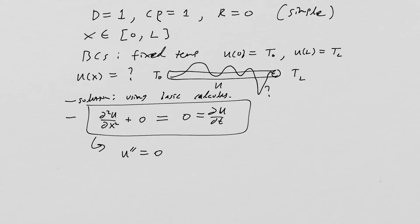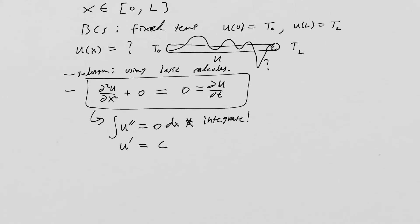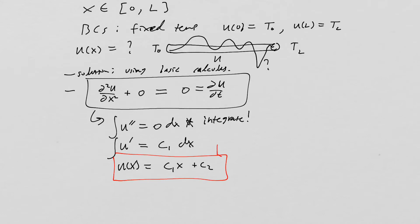Now let's find u using basic calculus. We integrate: the anti-derivative gives u prime equals c₁, remembering the integration constant. Integrating once more gives u(x) equals c₁x plus c₂, another integration constant. This is our general solution.